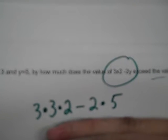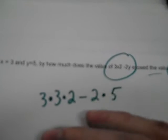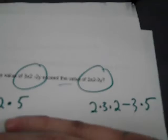By how much does that exceed the value of 2x² minus 3y? So those are the two expressions. What I've done is I write 3 times x, x is 3, so 3 times 3 times 2, minus 2 times the y, y would be 5. And over here we've got 2x, x is 3, times 3 times 2 minus 3 times 5, because y is 5.